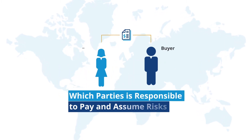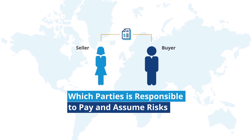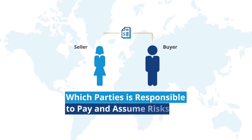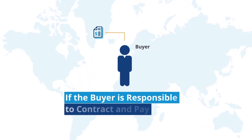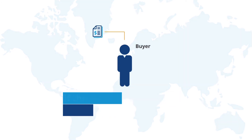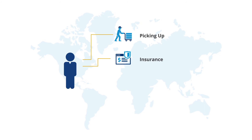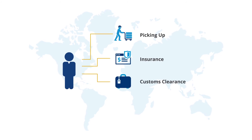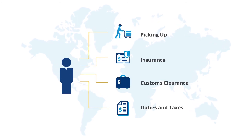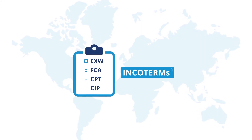These terms spell out which party is responsible to pay and assume risks at each stage in the international transit of goods. So if the buyer is responsible to contract and pay for picking up your product at the factory, insurance, arranging customs clearance, and paying all the duties and taxes, there is an Incoterm for that.